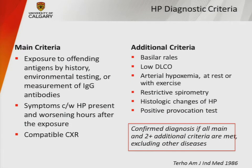Another set of proposed diagnostic criteria from 1986 required an exposure history by history or serum precipitins, symptoms consistent with HP that worsened hours after exposure — applying more to acute and subacute forms — a compatible chest x-ray, and additional criteria. HP was confirmed if you had all the main criteria plus two or more additional criteria met, with other diseases excluded.